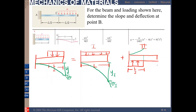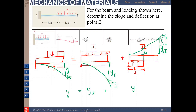The rest of the beam beyond C has no loading, so it remains a straight line. This gives us y2 at point B, along with slope theta2. Essentially, y2 is a combination of the beam deflection ya at point C and an additional component yb due to the straight-line extension. So in total: y = y1 + y2.